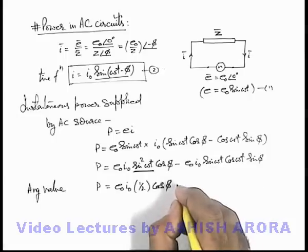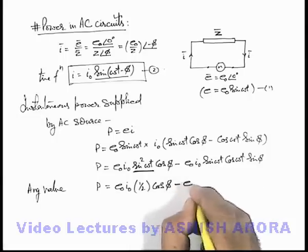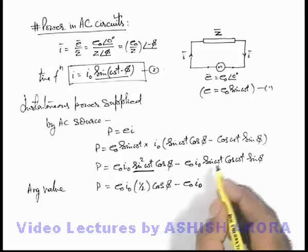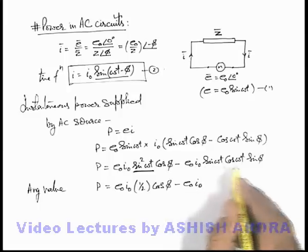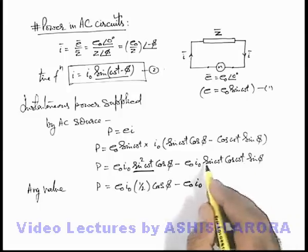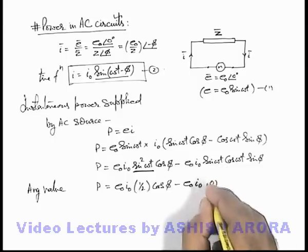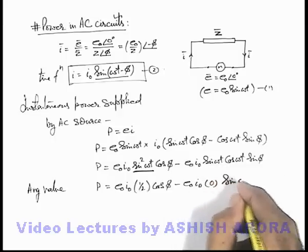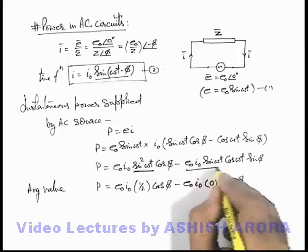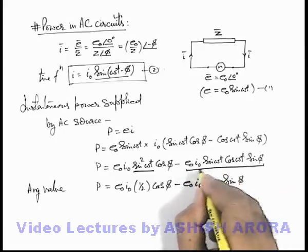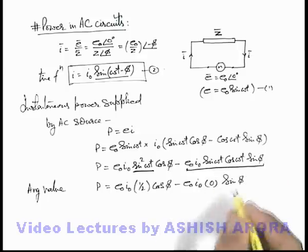And for this second term we can see, this e-not i-not sine omega t cos omega t can be written as half sine 2 omega t, and a sinusoidal function has an average value zero. So we can directly see in average value this second term does not have any contribution, so its value will be zero.